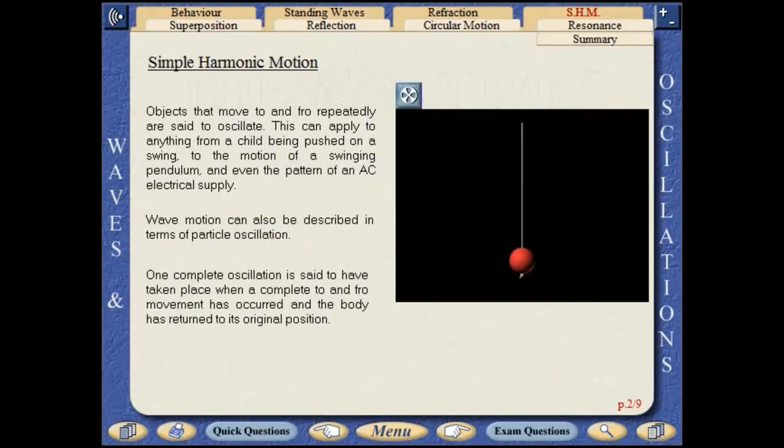Objects that move to and fro are said to oscillate. This can apply to anything from a child being pushed on a swing to the motion of a swinging pendulum, and even the pattern of an AC electrical supply.